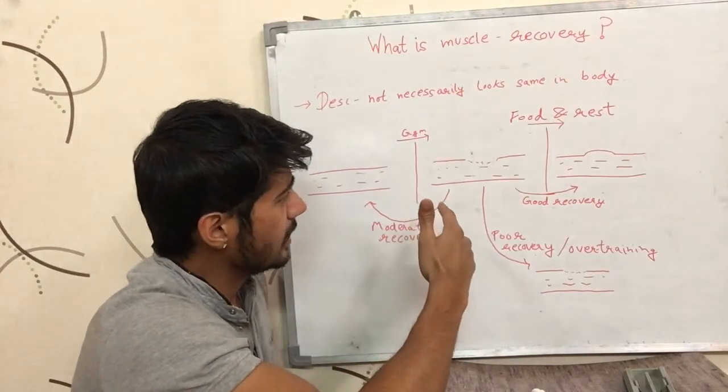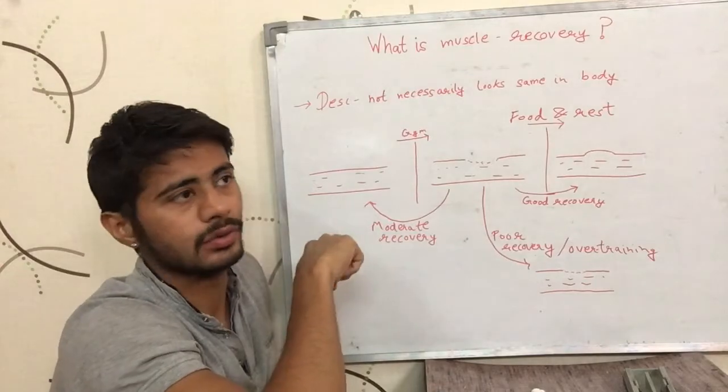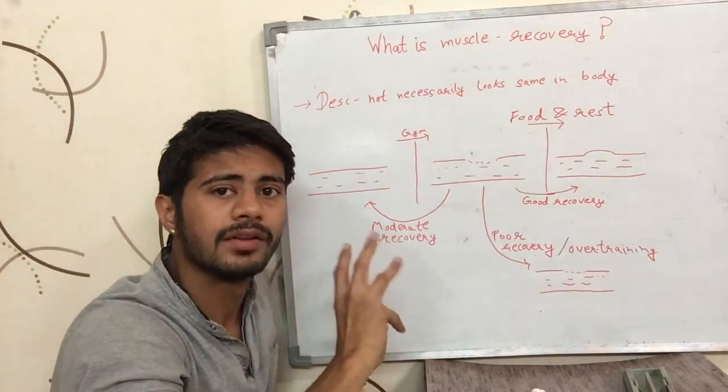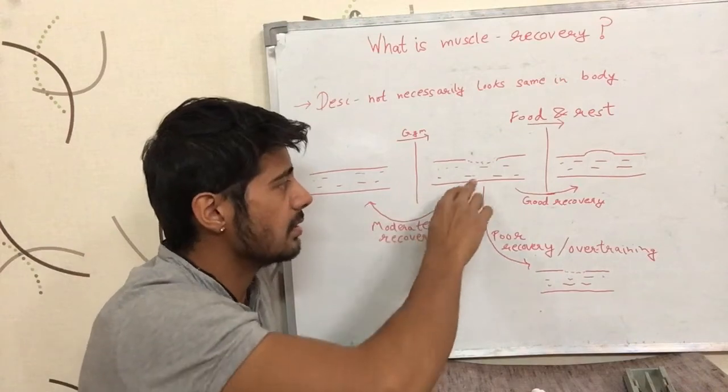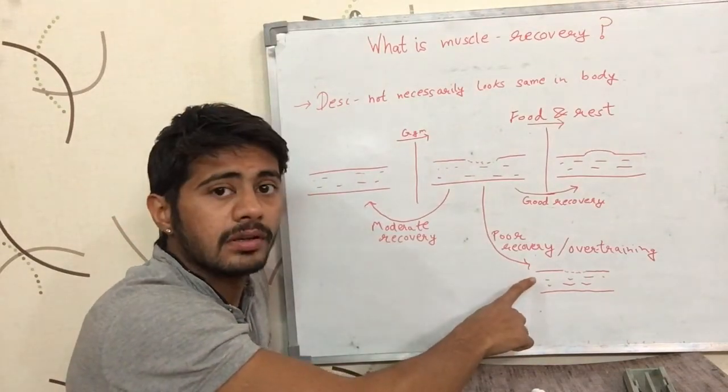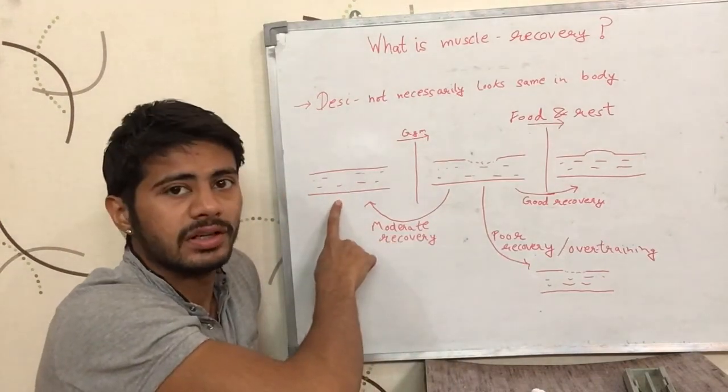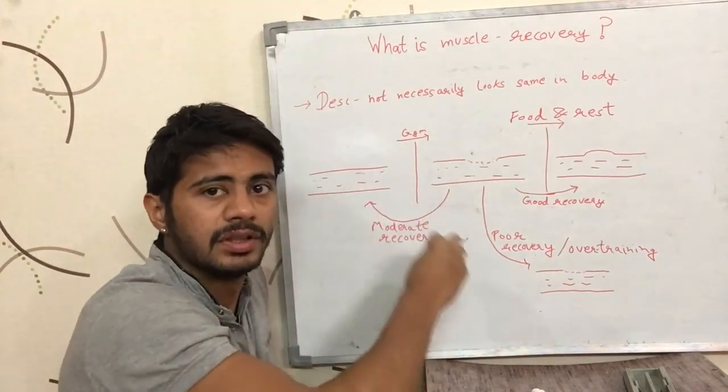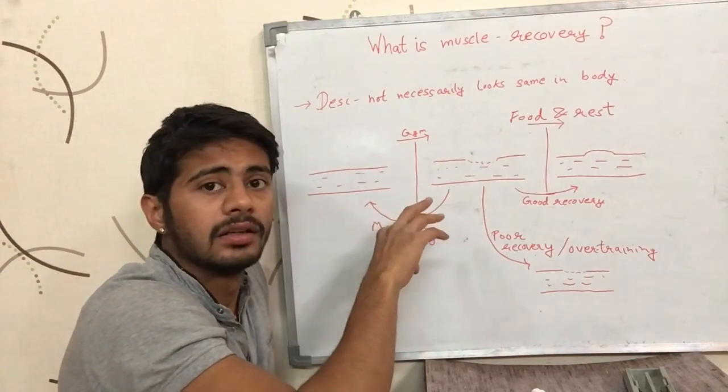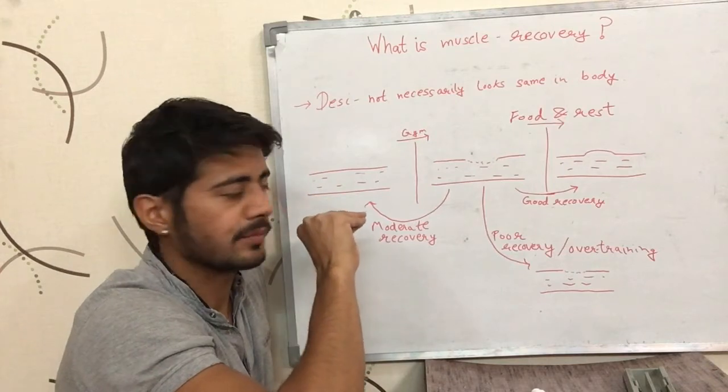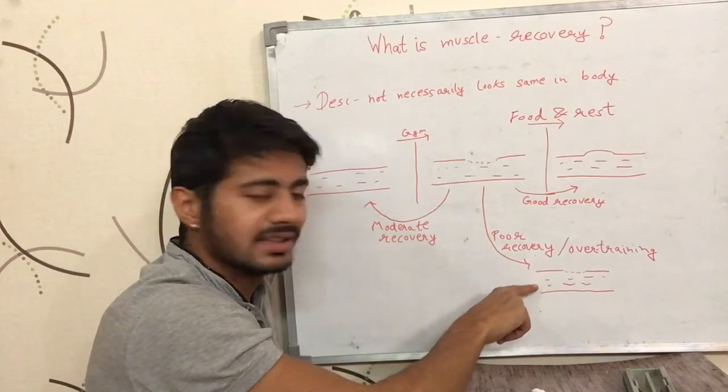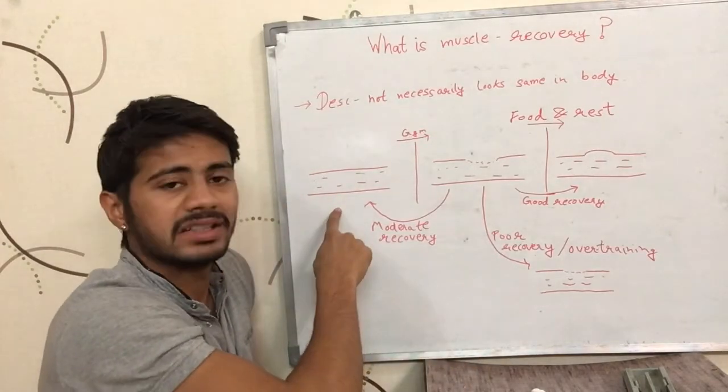Now, the third case is when you have poor recovery. You did not give it enough rest, you did not give it the right nutrition, the right foods. So your body could not recover properly. So you ended up in a stage which is worse than the stage you started with. You ended up with a muscle weaker than the muscle you started with. Although it recovered with any amount of food or rest you gave to the body, the rest and the food was not right enough for it to recover properly. And this stage after the improper recovery is worse than the stage we started with.